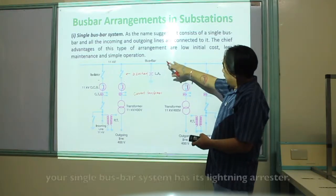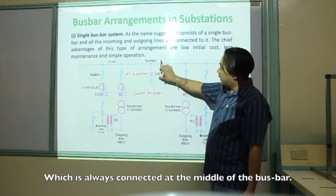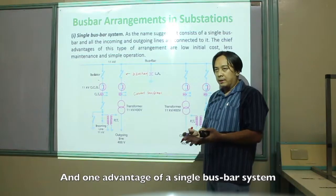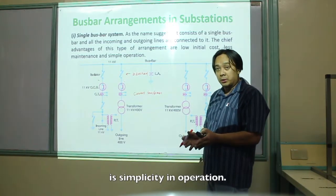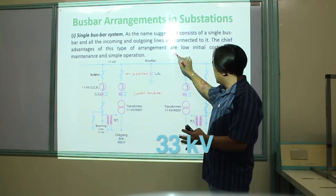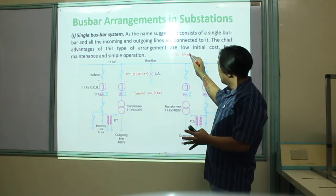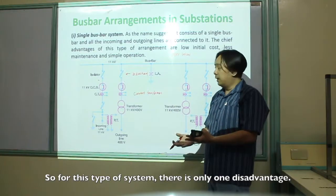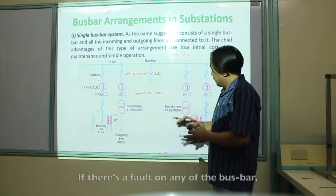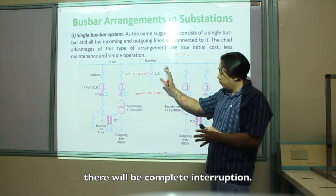Your single bus bar system has a lightning arrester, which is always connected at the middle of the bus bar. One advantage of a single bus bar system is simplicity of operation. Also, this type of bus bar operates at 33 kV and below. However, there is one disadvantage: if there is a fault on any of the bus bars, there will be a complete interruption.